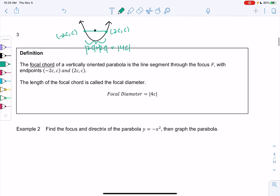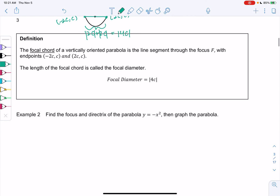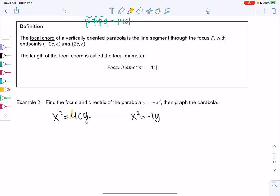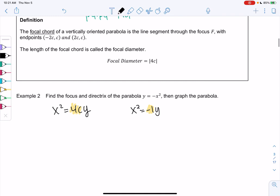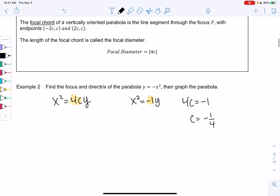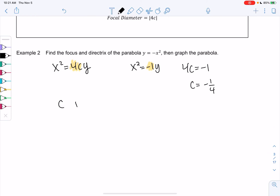Let's find the focus and directrix of a parabola when we have the formula y equals negative x squared. And then we'll go ahead and graph it. So I'm going to rewrite it so that it looks like x squared equals 4cy. So I'm just going to rewrite it as x squared equals negative y, just divide by that negative to move it to the other side. So this tells me that 4c is equal to negative 1. So c is equal to negative 1 fourth. So because c is negative, this graph will open down.